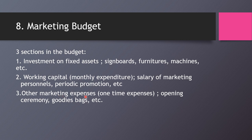Other marketing expenses are one-time expenses for the year — not recurring monthly. For example, a grand opening ceremony or a yearly anniversary promotion. For ENT 300 purposes, you only need to show the first-year budget. That covers all eight items of the marketing plan. I hope you can now draft your marketing plan for your business plan. If you have any questions, please ask in our Telegram chat. Thank you, bye!